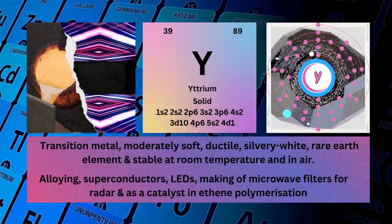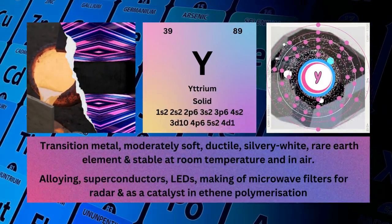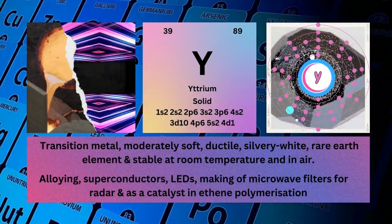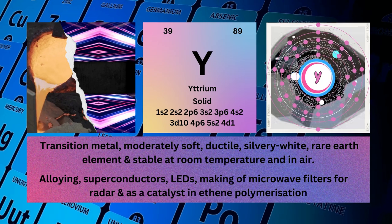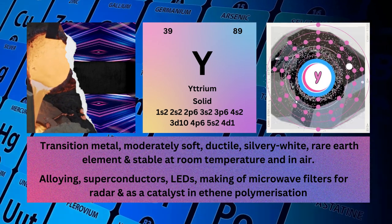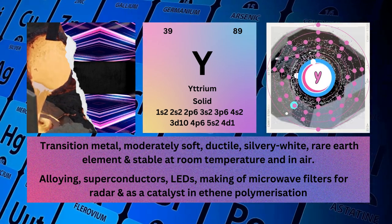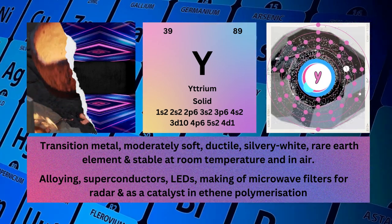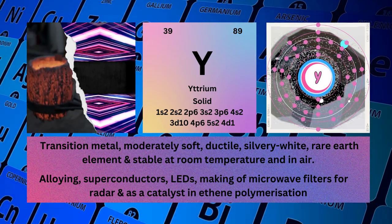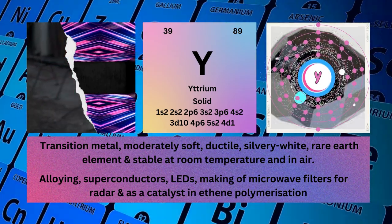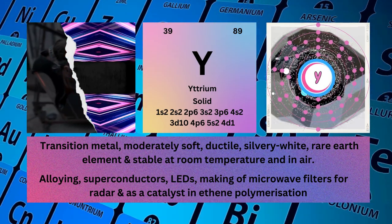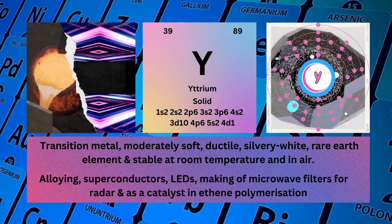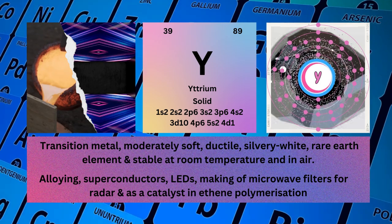Yttrium. Atomic number 39. Mass number 89. Symbol: Y. State: solid. Electronic configuration: 1s² 2s² 2p⁶ 3s² 3p⁶ 4s² 3d¹⁰ 4p⁶ 5s² 4d¹.